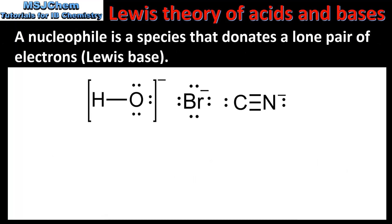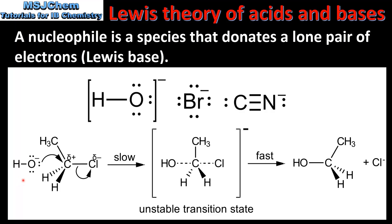Next we have nucleophiles, which are electron rich species that donate lone pairs of electrons, therefore they act as Lewis bases. Here we have 3 examples of nucleophiles. From left to right we have the hydroxide ion, the bromide ion, and the cyanide ion. In this reaction we have the hydroxide ion acting as a nucleophile. In the reaction a halogeno alkane is converted to an alcohol. This reaction will be covered in more detail in topic 20.